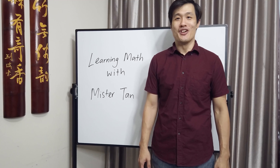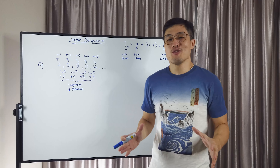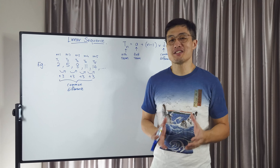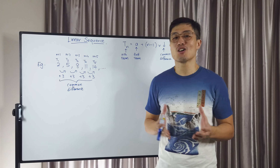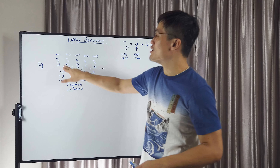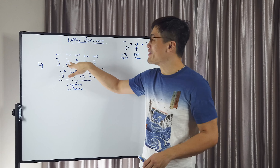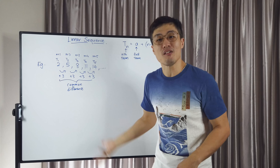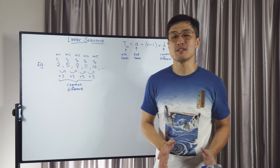Welcome to learning math with Mr Tan. Today we're talking about linear sequences. In linear sequences, the difference between consecutive terms is constant. So the common difference between consecutive terms for this sequence is a constant of three. This is what we call a linear sequence.